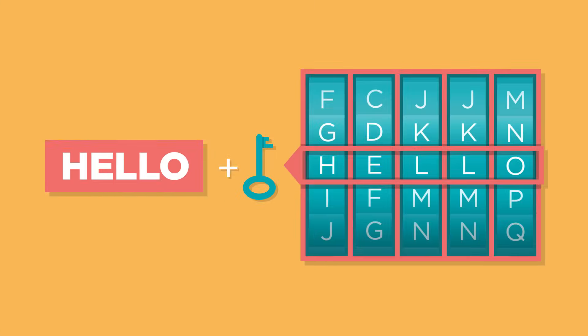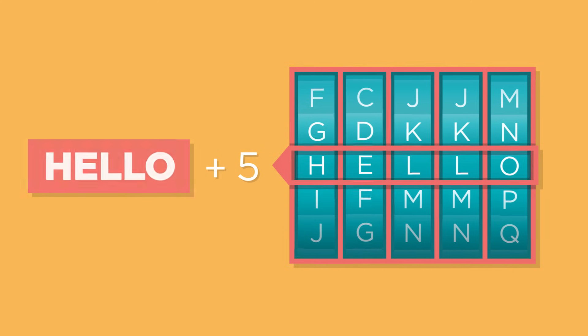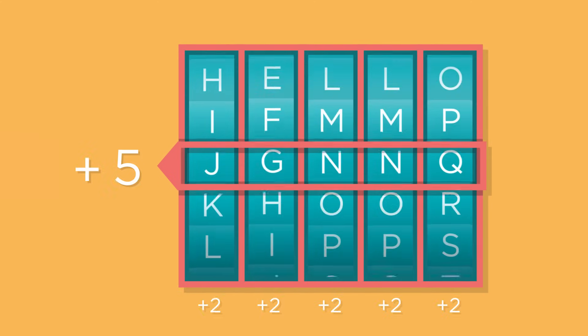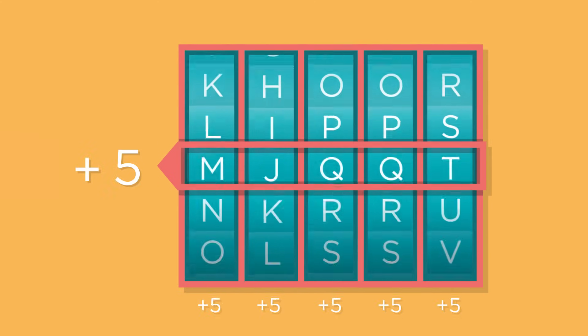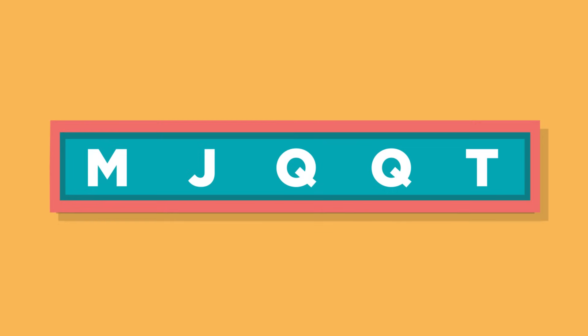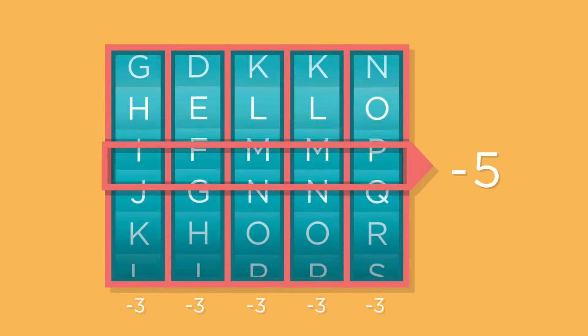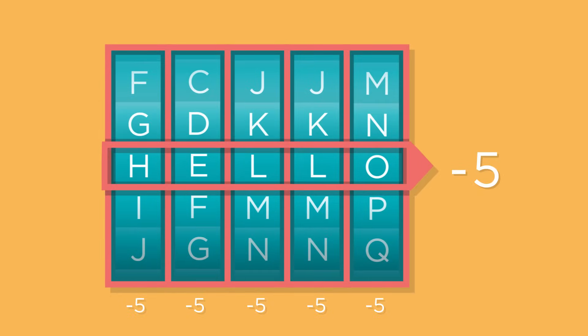It allows the reader to unlock the secret message. For example, if your original message is 'hello,' then using the Caesar's cipher algorithm with a key of five, the encrypted message would be this. To decrypt the message, the recipient would simply use the key to reverse the process.